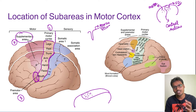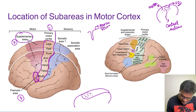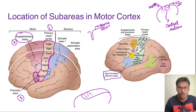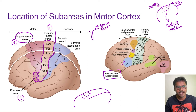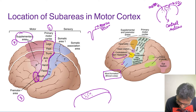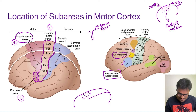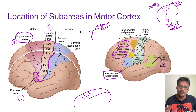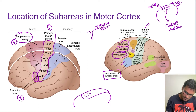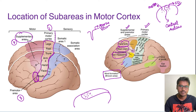There are also additional areas called specialized areas, because they specifically perform certain actions. These include Broca's area for word formation, the eye field area for eye movements, a head rotation area, and a hand skills area. All these specialized areas are located just in front of the primary motor cortex.